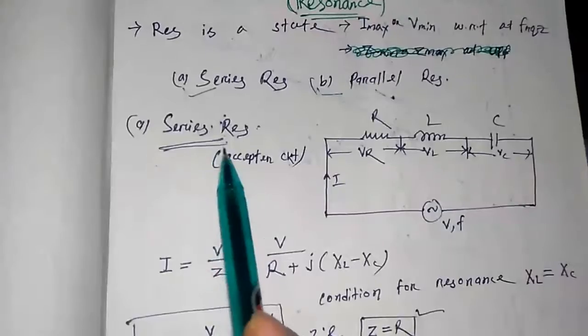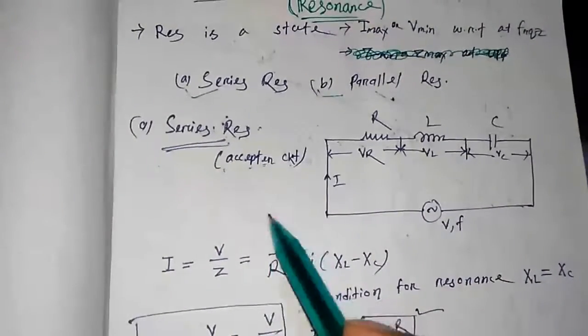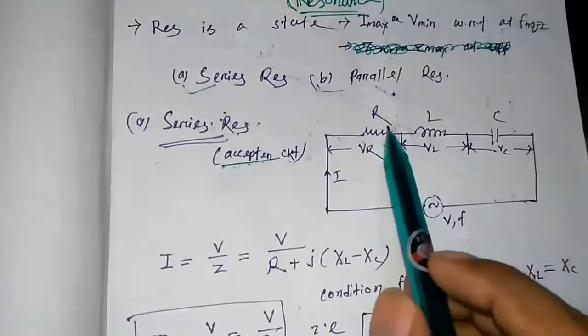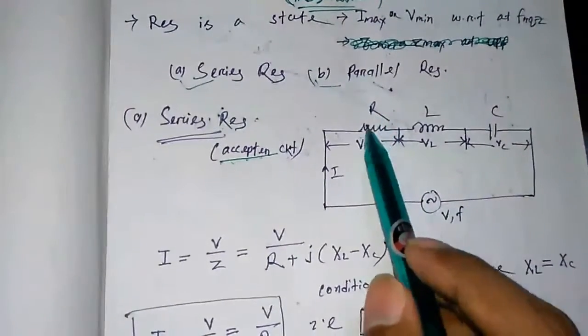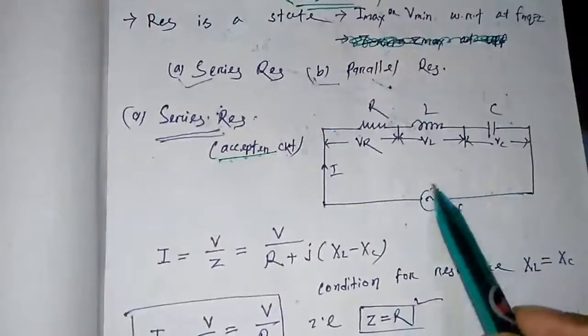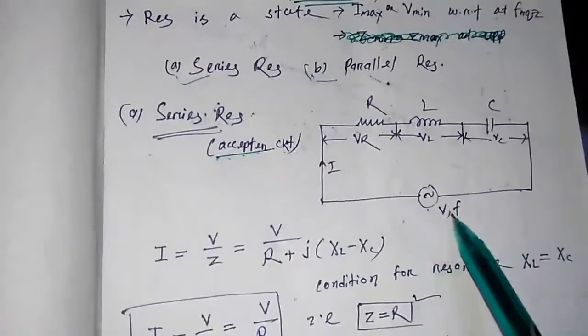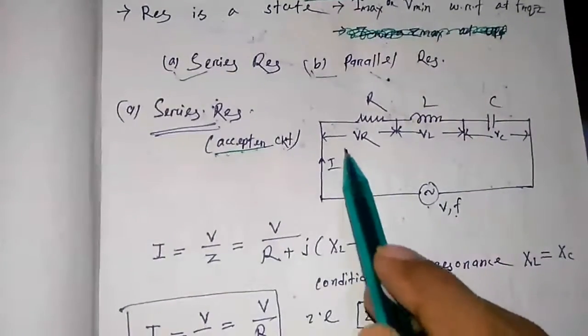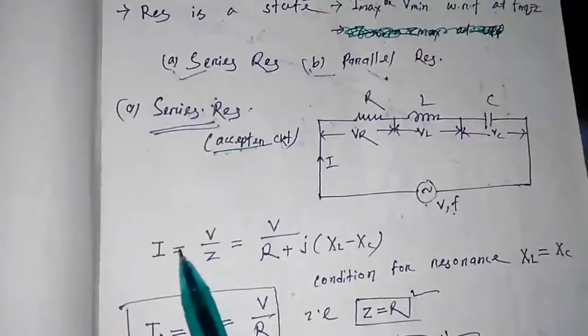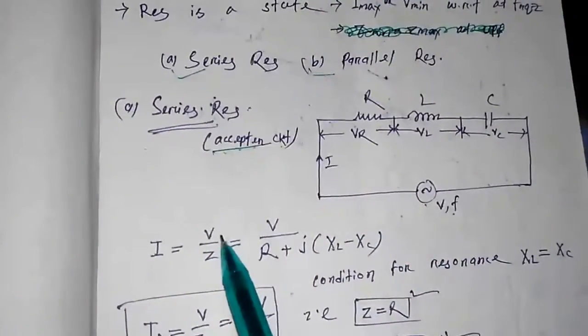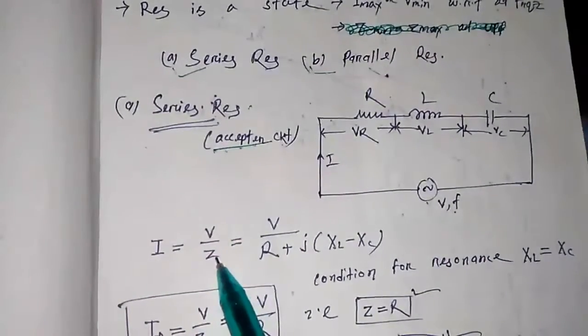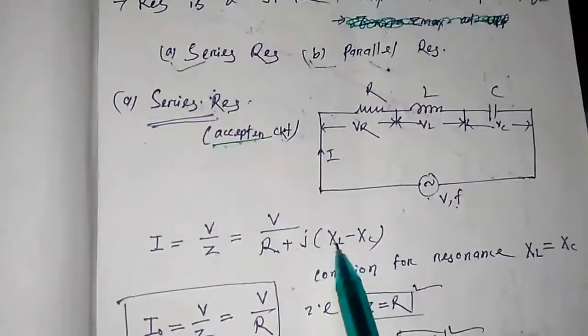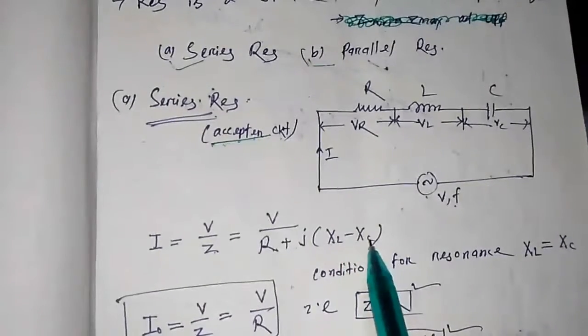Series resonance circuit is also called acceptor circuit. With series of resistors R, L and C supplied by a voltage source having frequency F, current through this circuit will be the total voltage divided by the impedance Z. This impedance is given by R plus j(XL minus XC).